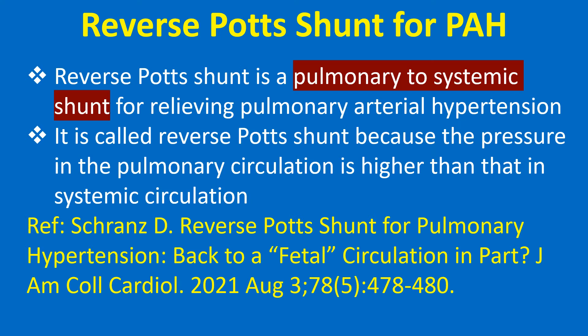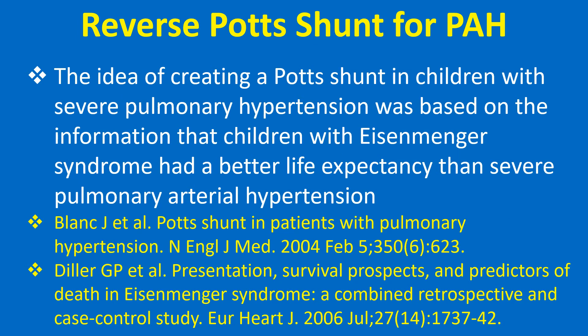Reverse Potts shunt is a pulmonary to systemic shunt for relieving pulmonary arterial hypertension. It is called reverse Potts shunt because the pressure in the pulmonary circulation is higher than that in systemic circulation. The idea of creating a Potts shunt in children with severe pulmonary hypertension was based on the observation that children with Eisenmenger syndrome had a better life expectancy than those with severe pulmonary arterial hypertension.